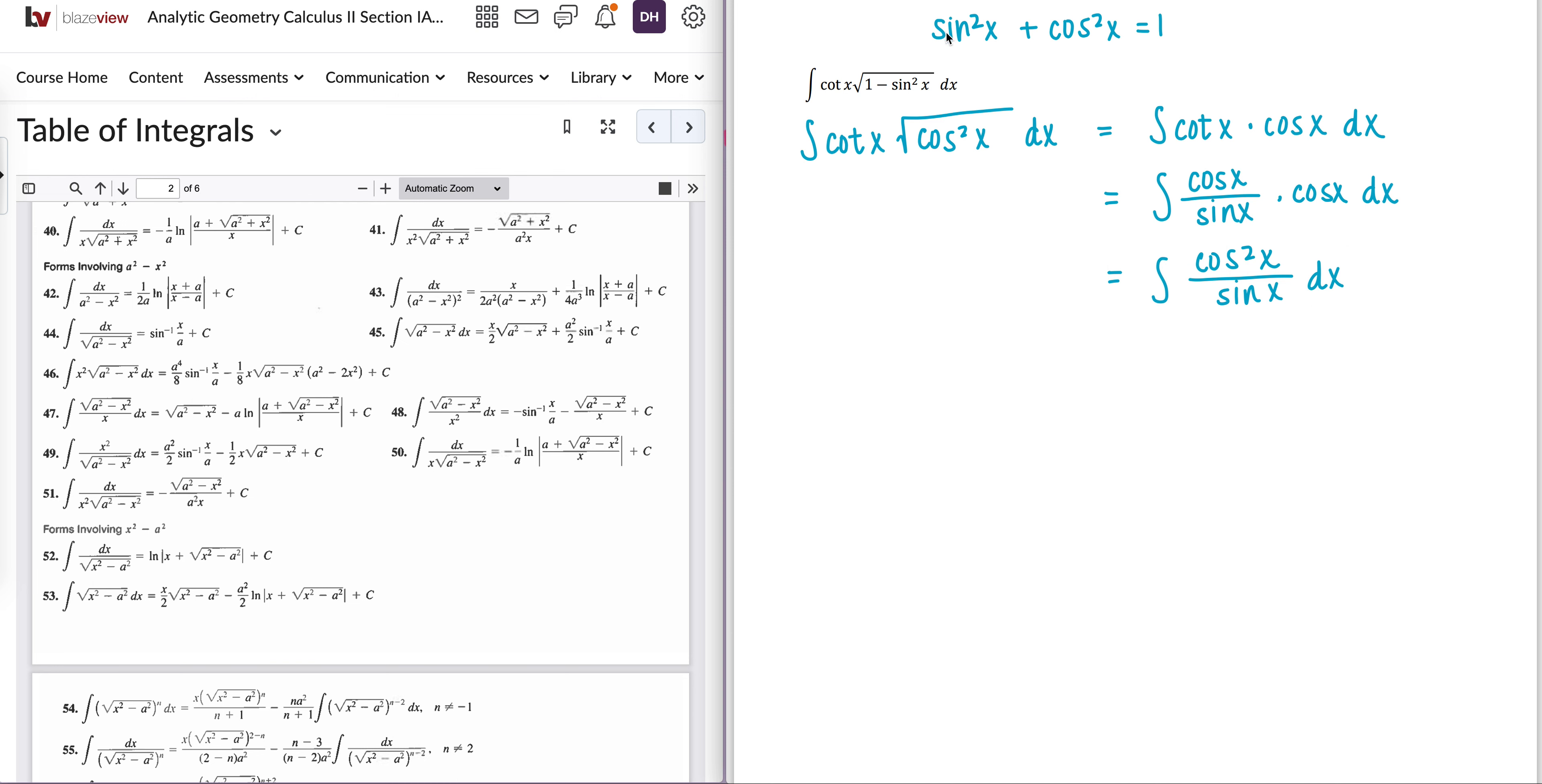Now, using that exact same trig identity up here, I can rewrite the cosine squared x as 1 minus sine squared x. And then I can write this as two separate fractions. So this is the same thing as having 1 over sine x dx minus sine squared over sine is just sine x dx.